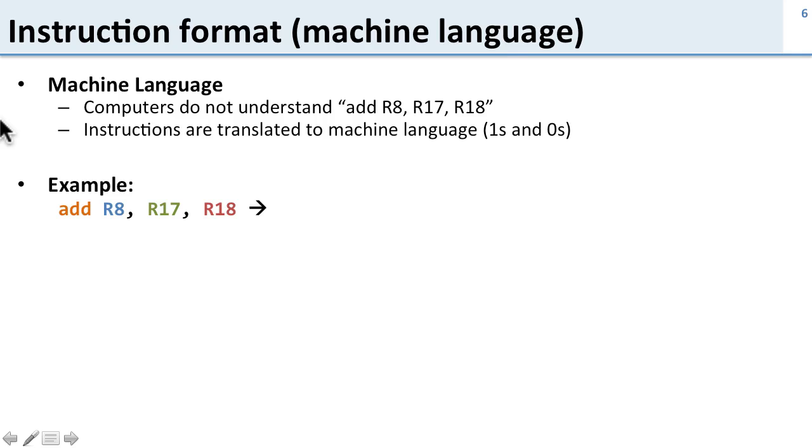Let's take a look at an example. Here's an instruction: add R8, R17, R18. We're going to add R17 and R18 and store them into R8. Let's see what this looks like when we convert it to machine language.